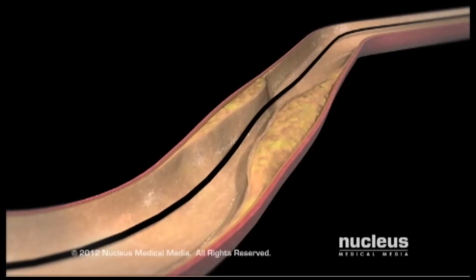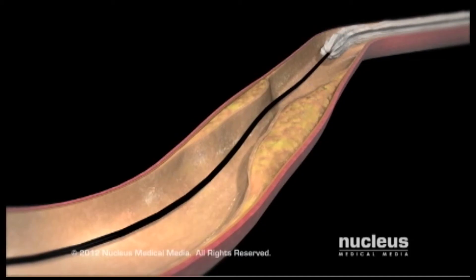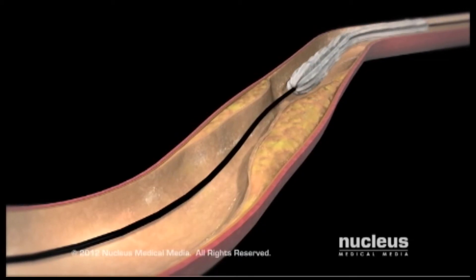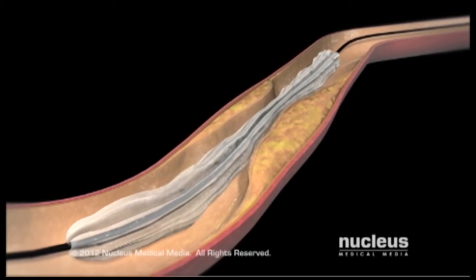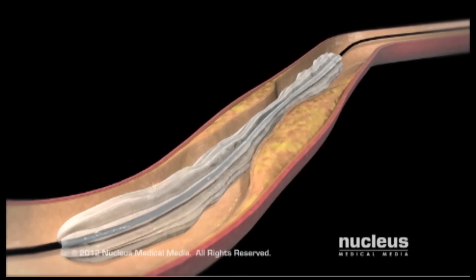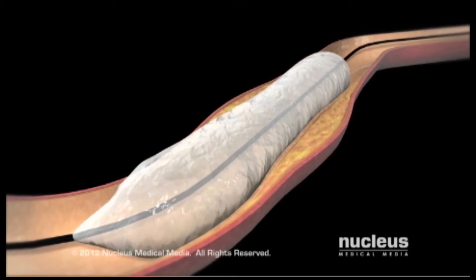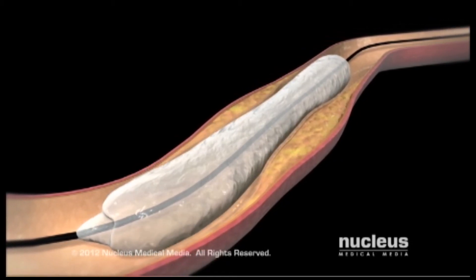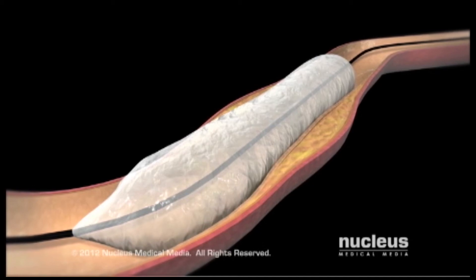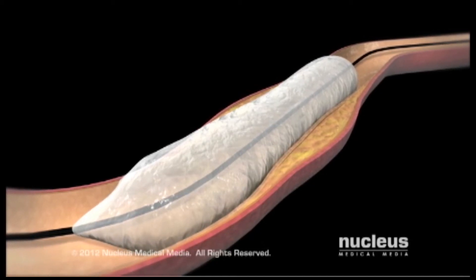Next, your doctor will move the catheter until the deflated balloon at its tip is positioned at the site of the stenosis. Then, by rapidly inflating and deflating the balloon, your doctor will gently push the plaque and vessel wall out, partially re-establishing blood flow.